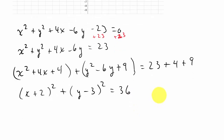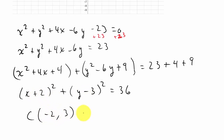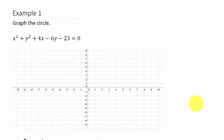Here we can see the center and radius. Remember, h and k have the opposite signs of what you see in the equation. So the center is (negative 2, 3) and the radius is 6. I'll go ahead and write that up here: center is (−2, 3) and radius is 6.